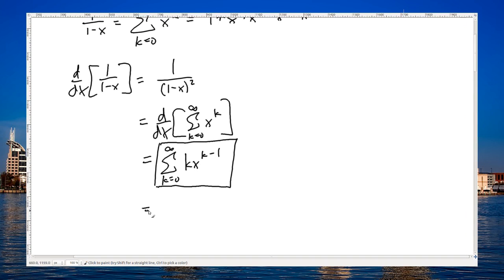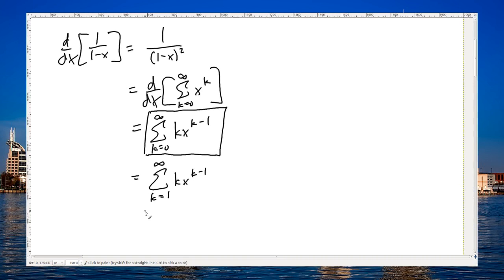If you prefer, though, you can get rid of that 0 term. If you plug in a 0, that doesn't do anything, so make that k is equal to 1, kx to the k minus 1, and then re-index back to 0 by subtracting 1 here and adding 1 here and here. Exactly the same thing.